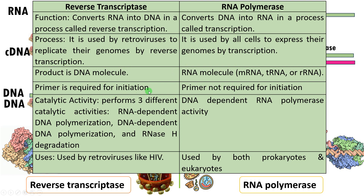Reverse transcriptase requires a primer, whereas RNA polymerase does not. Reverse transcriptase has three catalytic activities: RNA-dependent DNA polymerase, DNA-dependent DNA polymerase, and ribonuclease. RNA polymerase is a DNA-dependent RNA polymerase. Reverse transcriptase is present in retroviruses like HIV, whereas RNA polymerase is present in all organisms — both prokaryotes and eukaryotes.